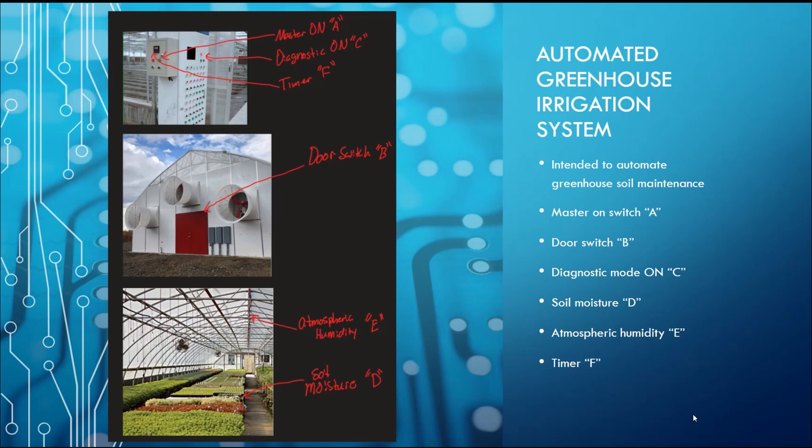The system requires that input A, the master switch, is high and input C, diagnostic mode, is also high, before allowing the diagnostic mode to activate. In this scenario, all other inputs are disregarded, and the irrigation system will be turned on to allow diagnostics.